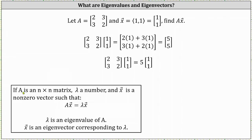When matrix A is an n-by-n matrix, lambda is a number or scalar, and vector X is a non-zero vector such that matrix A times vector X equals lambda times vector X, then the scalar lambda is an eigenvalue of matrix A, and vector X is an eigenvector corresponding to lambda.